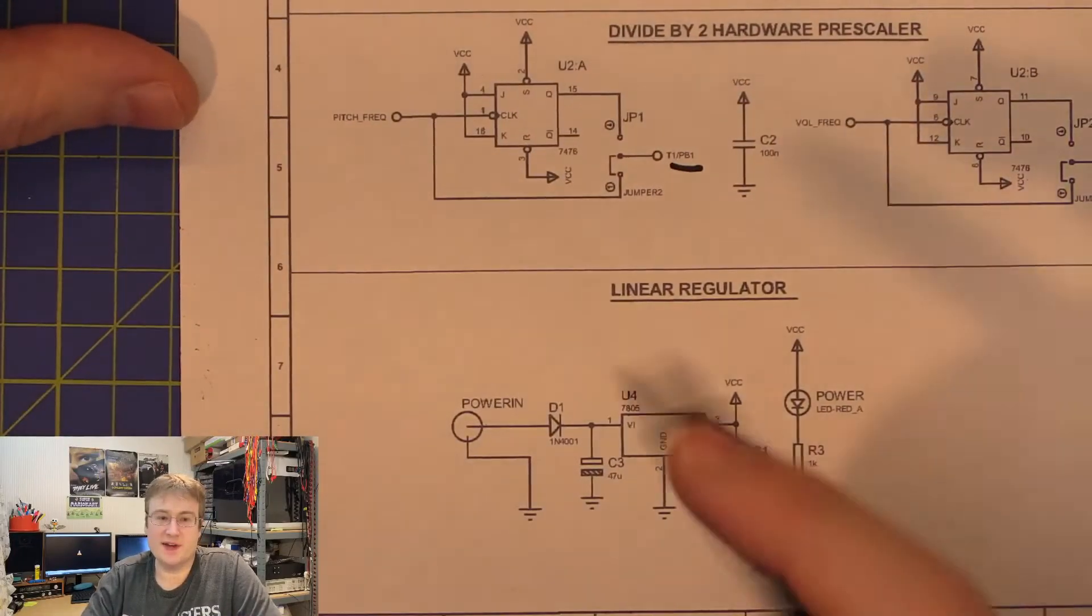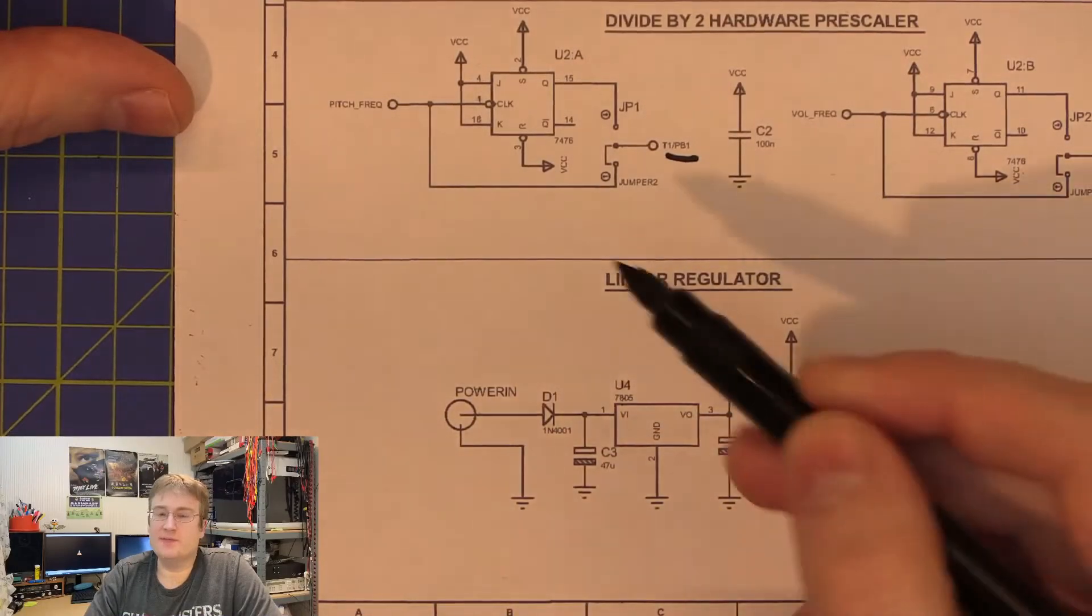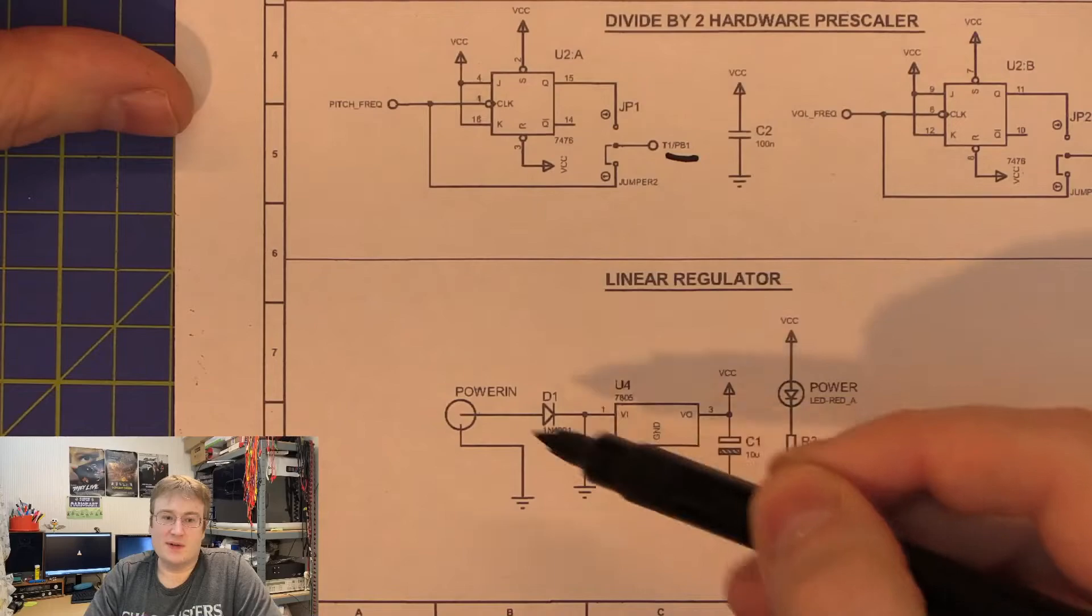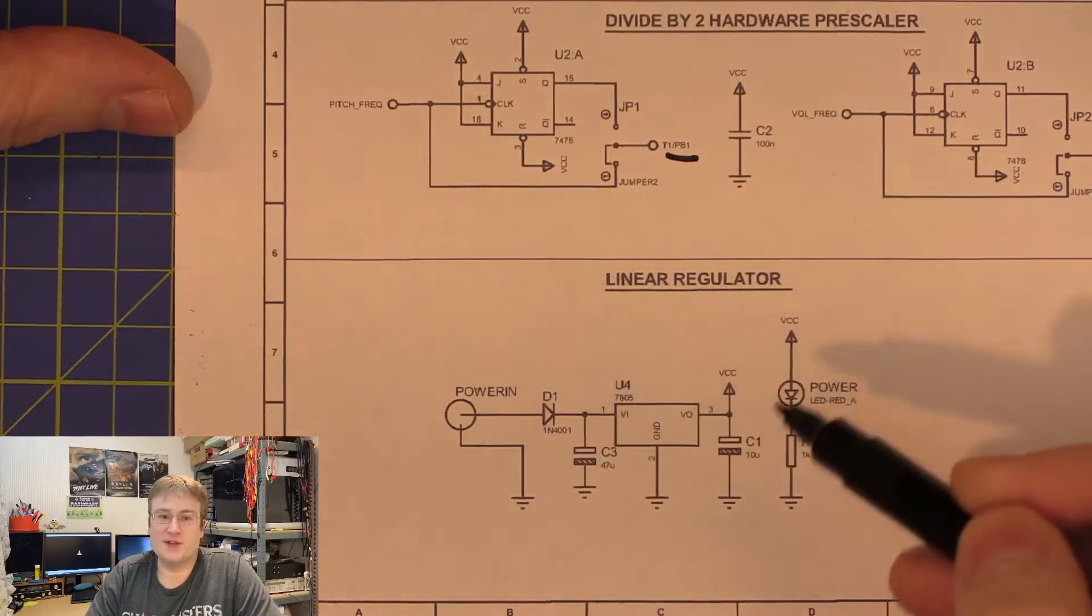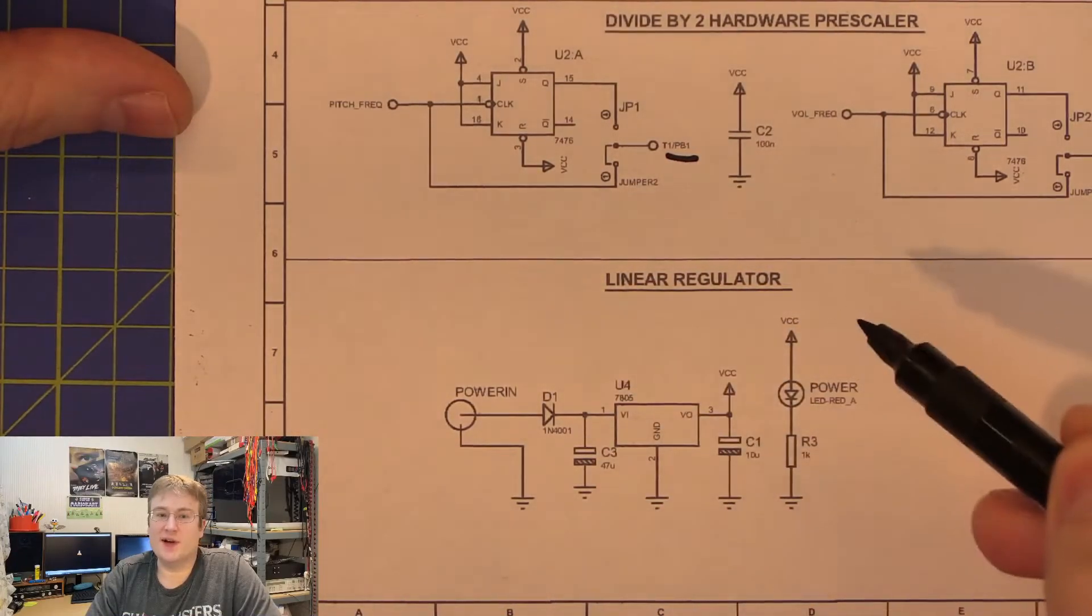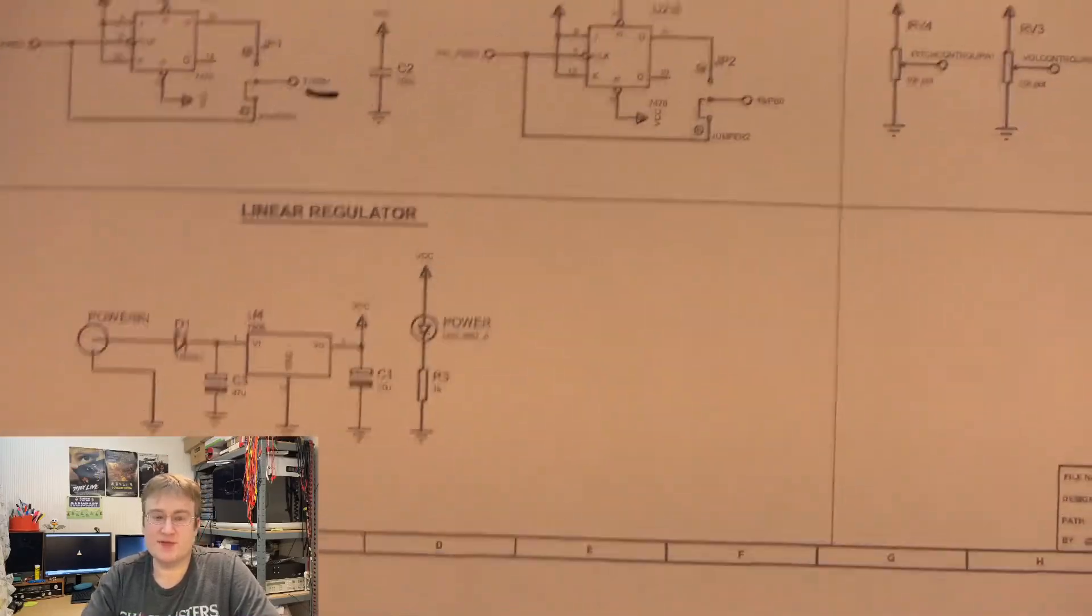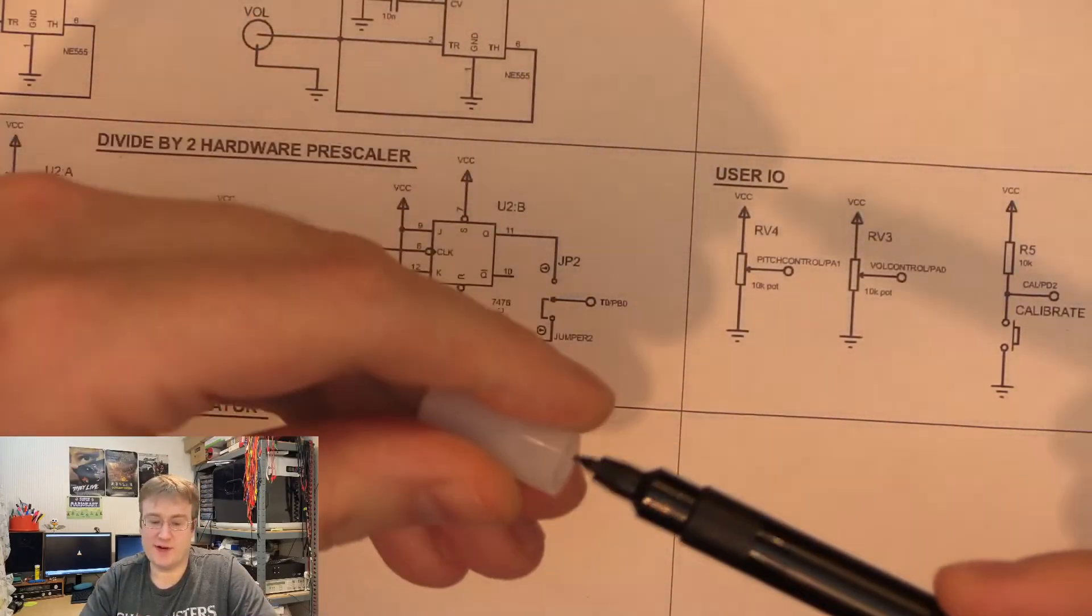The only other circuitry here is just some simple power circuitry, so just a reverse polarity protection diode and a very simple 7805 and a power LED. So that's the circuitry of the thing, it's very very simple.